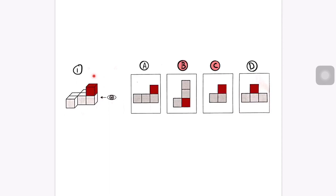If you pay close attention to this shape, you can see that on the second layer there is a red block. When looking at it in 2D, you'll see a red square instead of a cube. Now, the red cube is positioned in the middle of the shape.